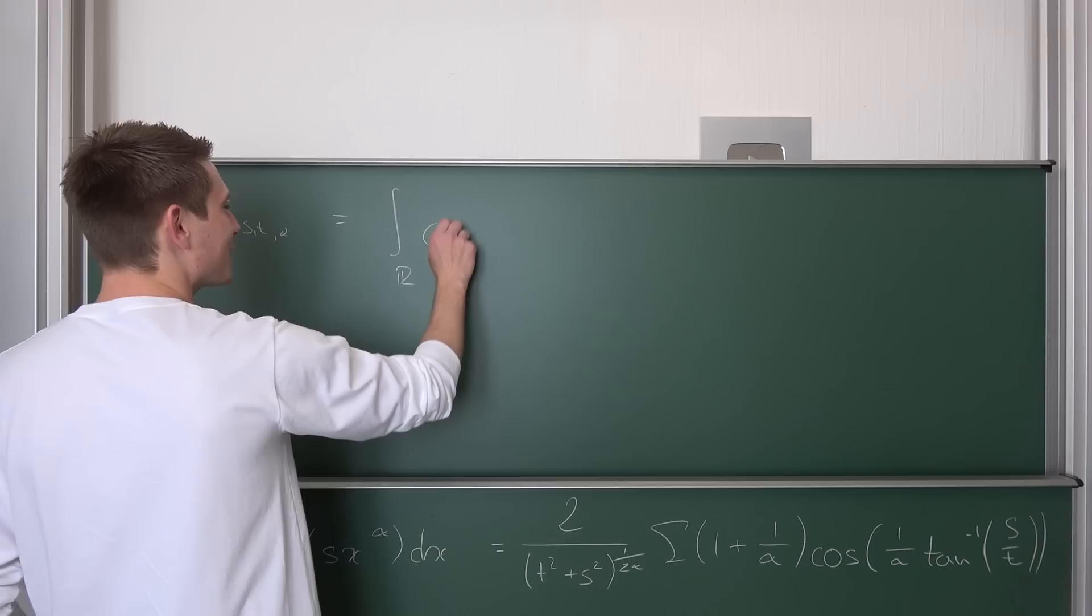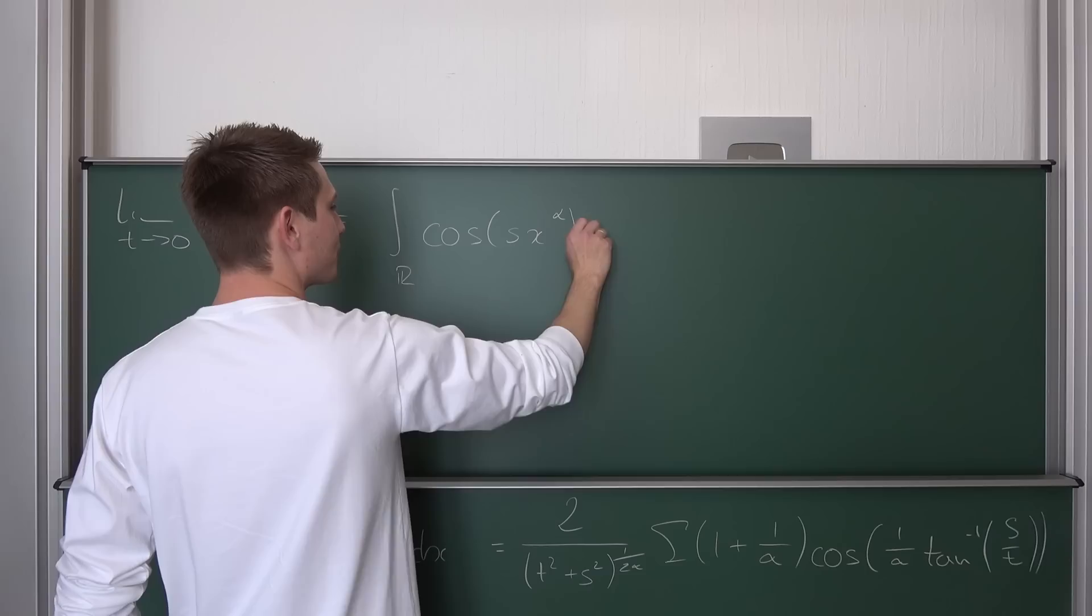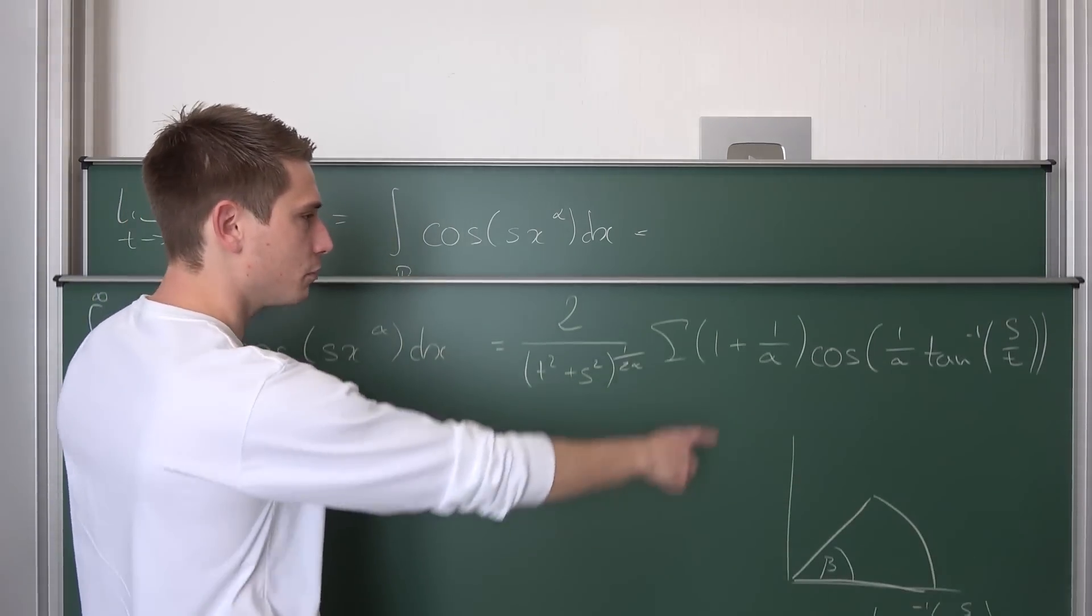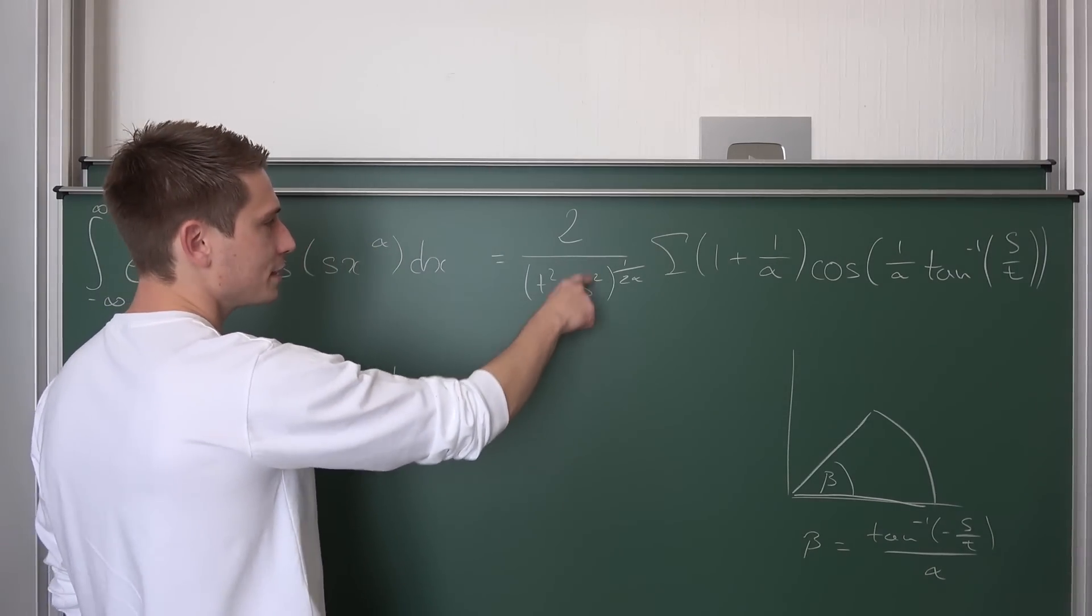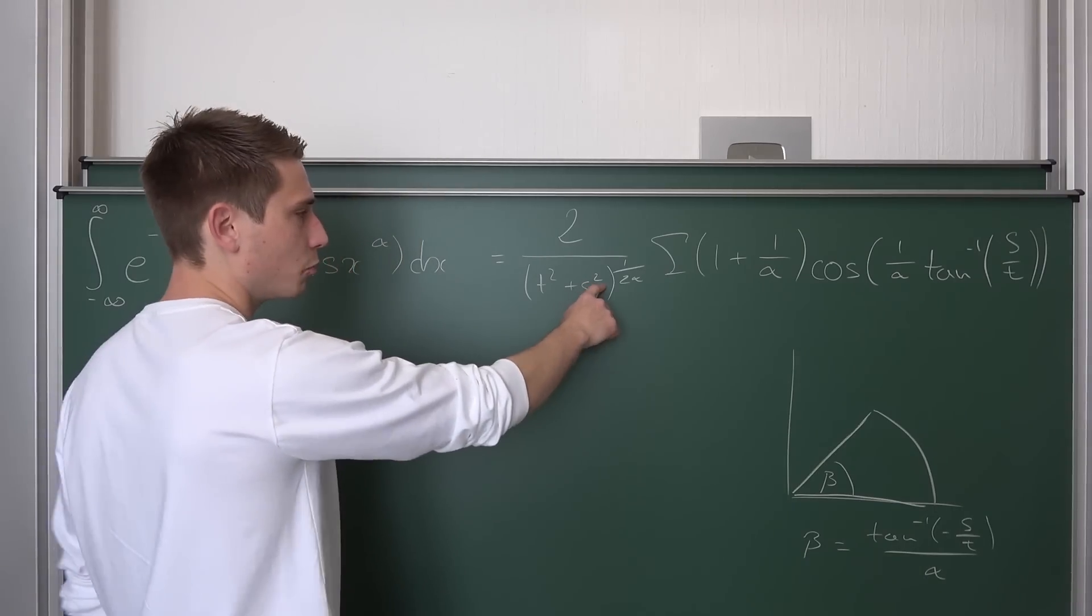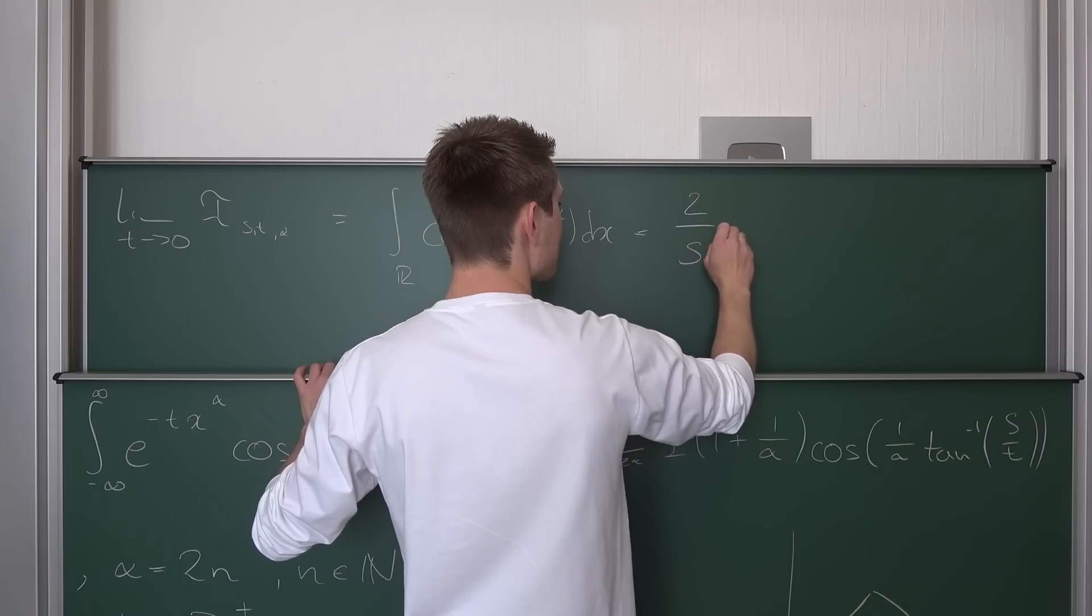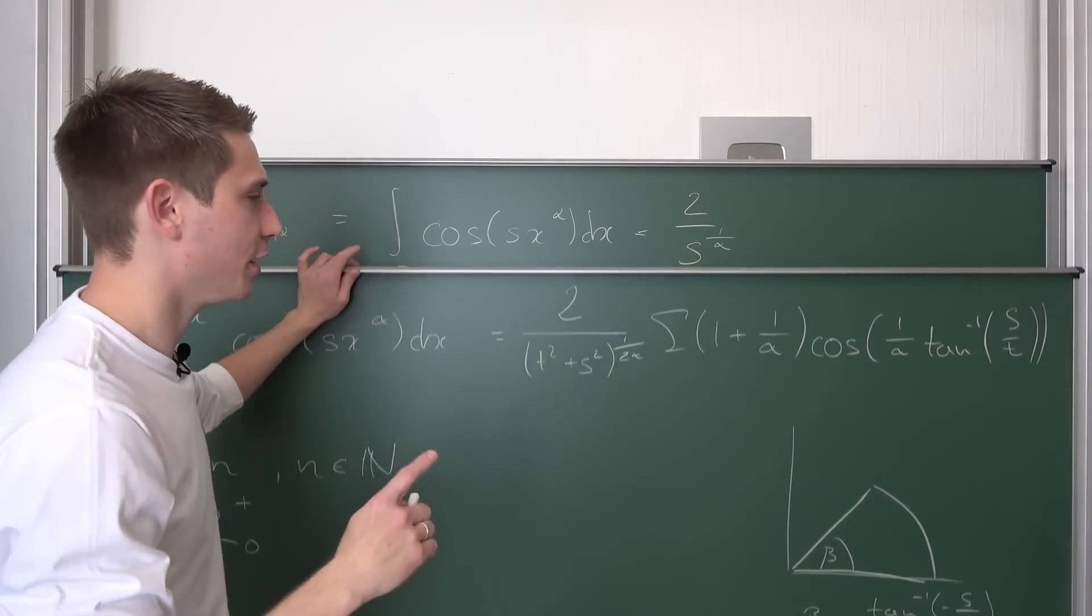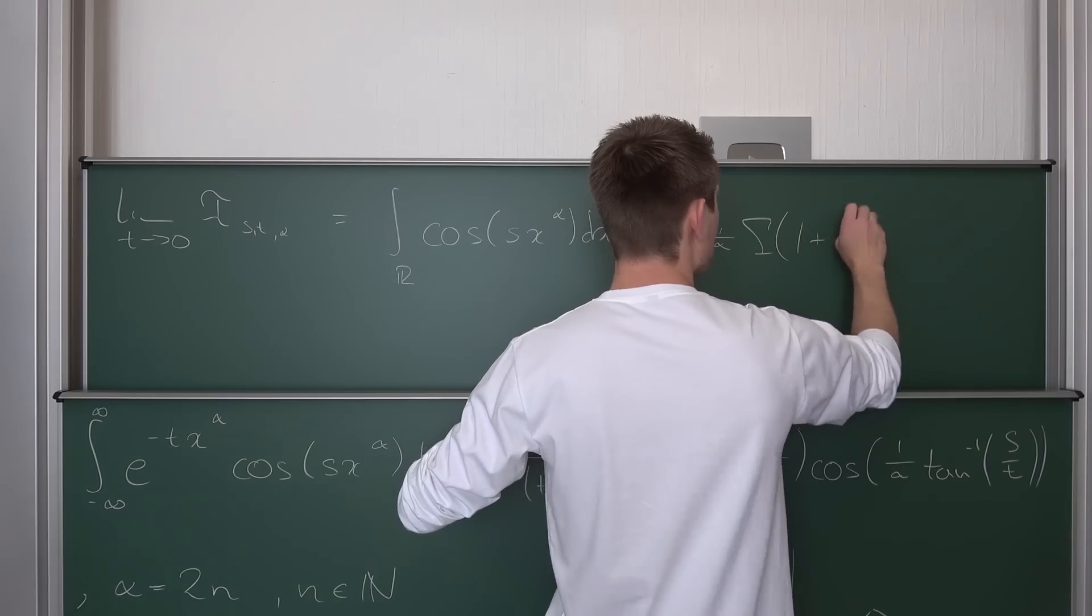This is nothing but the integral over the whole of R of the cosine of s times x to the alpha, integrated with respect to x. Now we are also going to take the limit as t approaches zero on this side. If t approaches zero on this side, well, this is going to be easy. This is 2 over s squared to the 1 over 2α—the 2 and 1 half is going to cancel out. So this is going to give us 2 over s to the 1 over α, so the αth root of s. Also, the gamma function is going to stay how it is: Gamma of 1 plus 1 over α.